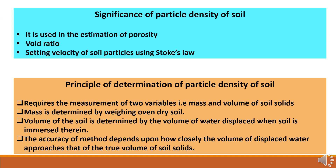Particle density is used in the estimation of porosity, void ratio, and the settling velocity of soil particles using Stokes' law. The determination of particle density requires measurement of two variables: mass and volume of soil solids. Mass is determined by weighing oven-dry soil, and volume of the soil is determined by the volume of water displaced when soil is immersed in it. The accuracy of the method depends on how closely the volume of displaced water approaches the true volume of soil solids.